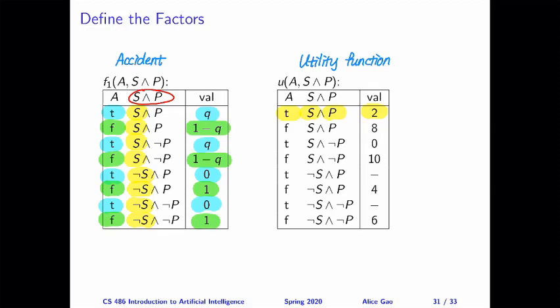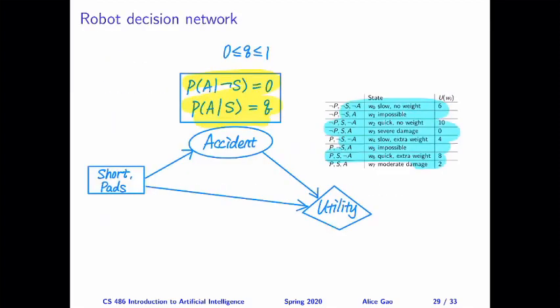Now that we have put everything into factors, then the first step of the algorithm tells us that we need to prune all the nodes that are not ancestors of the utility node. In our decision network, every node is the ancestor of the utility node. So we don't have to do anything for step 1. Let's move on to step 2.